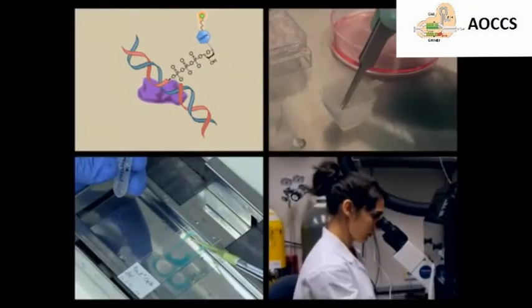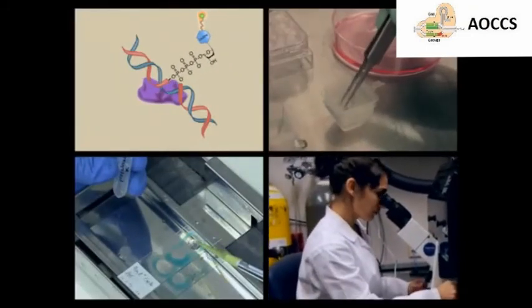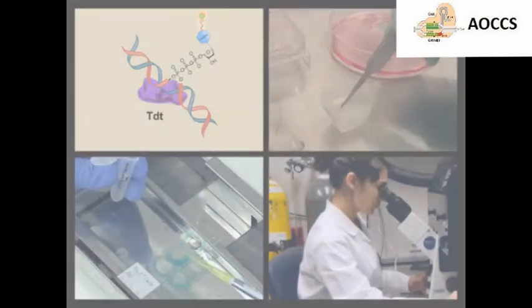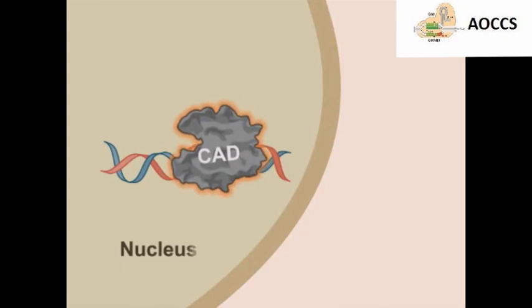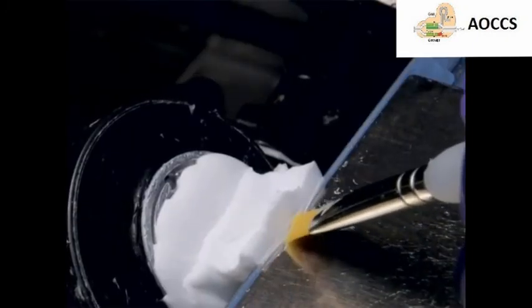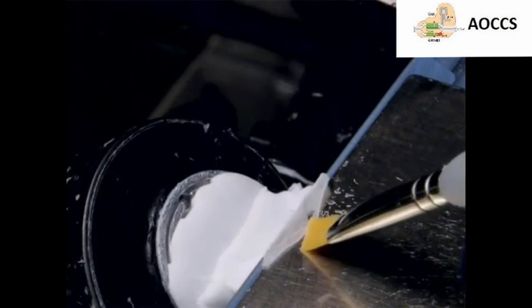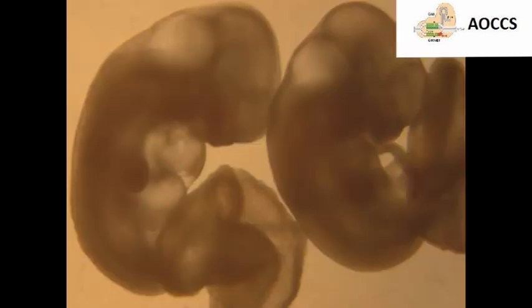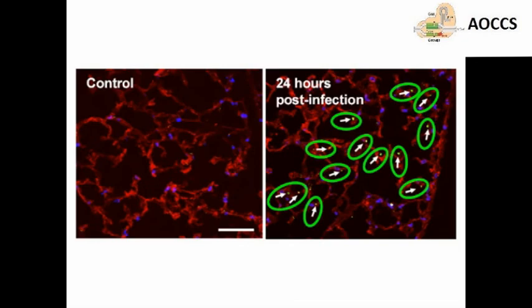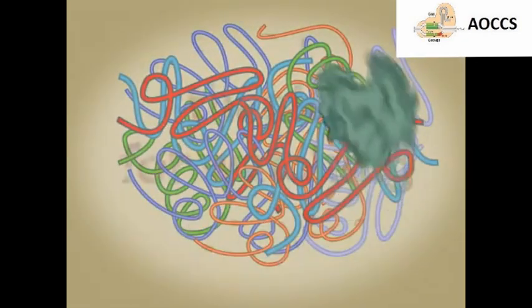You've just watched JoVE's video on using the TUNEL assay to detect cells undergoing apoptosis. This video reviewed the principles behind TUNEL staining and a step-by-step protocol to perform the TUNEL assay on tissue sections. We also reviewed how this method could be applied to understand programmed cell death during development and disease. As always, thanks for watching.